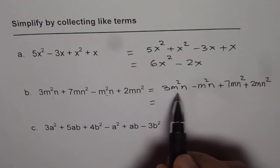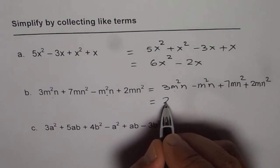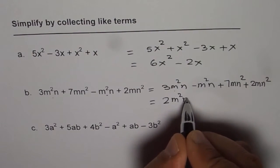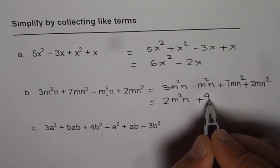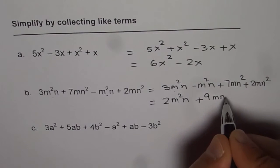Let's combine the like terms. M²n, 3 - 1 is 2, so we get 2m²n. And here 7 + 2 is 9, so we get +9mn².